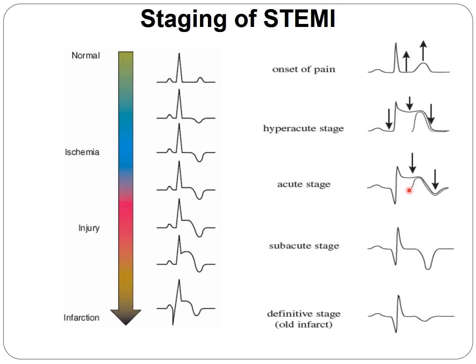In the subacute stage, there are no ST changes — only a Q-wave and negative T-wave. If the patient develops an aneurysm, the ST segment will not return to baseline. So if someone has persistent ST elevation after MI, you have to think about an aneurysm developing in the necrotic scar tissue. In the definitive stage, only the Q-wave remains. The T-wave can be flat, positive, or negative, but necrosis stays forever.